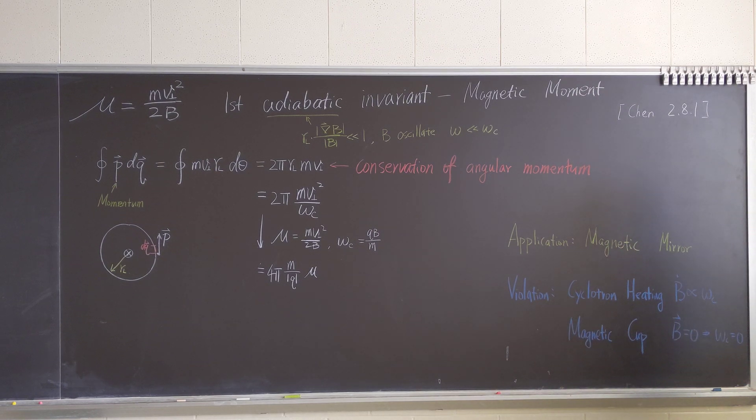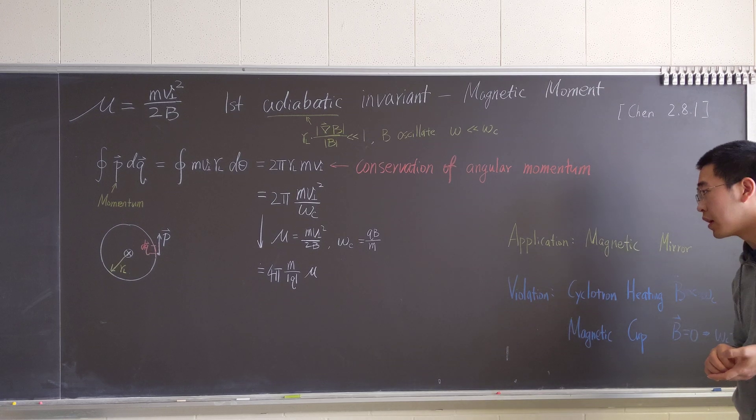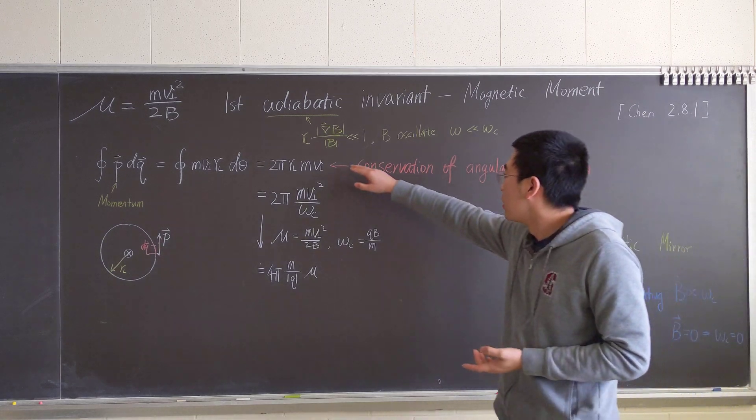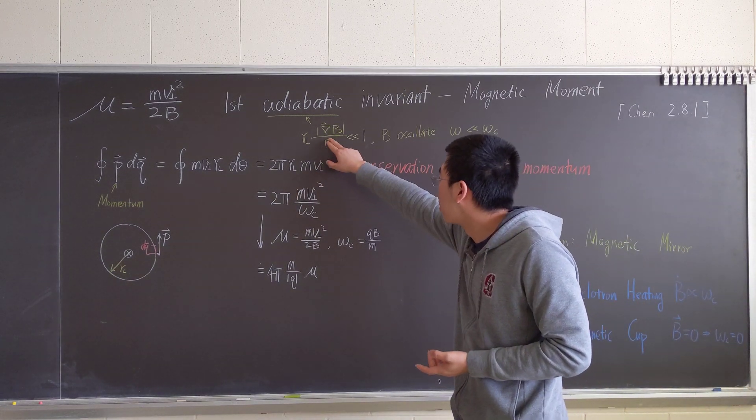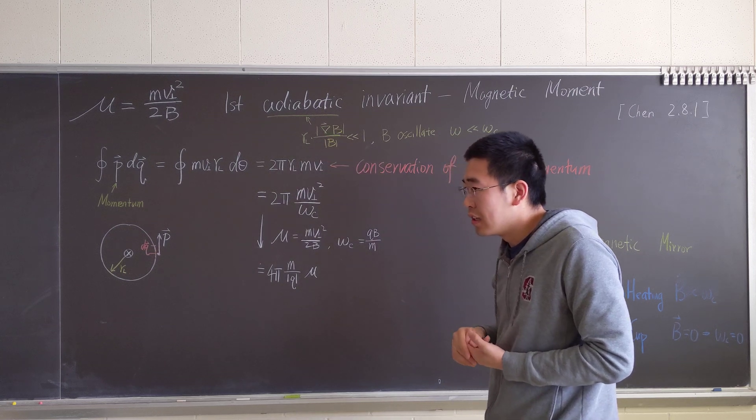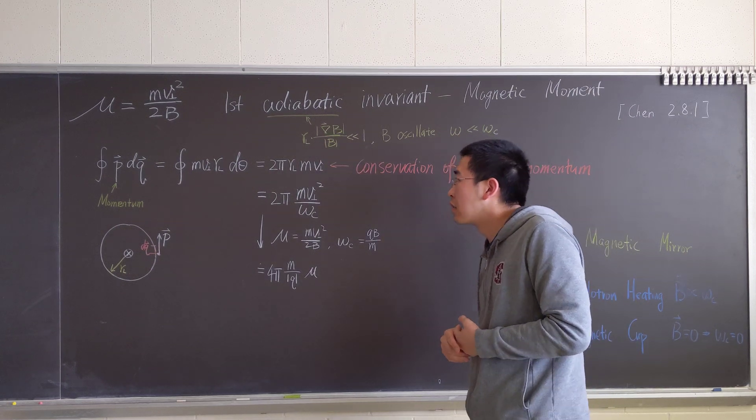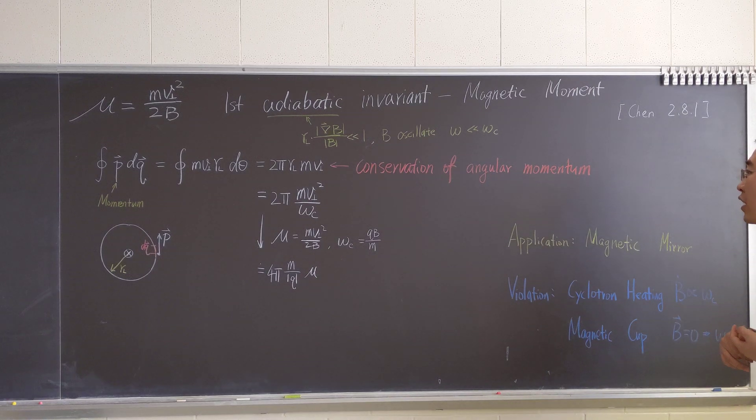It's a magnetic null. The B is, the magnetic field strength is zero at that point. So this won't work anymore because that will be μ over B. It's essentially infinity.